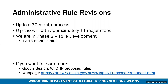Because administrative rules are under the umbrella of state statutes, there is quite a lengthy process to change those rules. It can take up to 30 months to go through the entire process. There are approximately six phases in the rule development process, with about 11 major steps embedded in there. Currently, the aquatic plant management program is in phase two rule development. That phase is approximately 12 to 16 months total. Our scope statement, which is phase one, was approved last May. We anticipate moving forward with a draft of the rule and on to phase three sometime this summer.